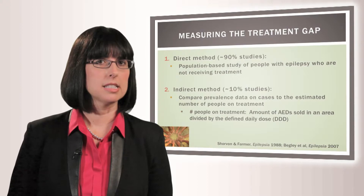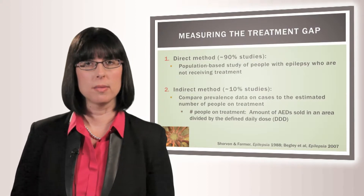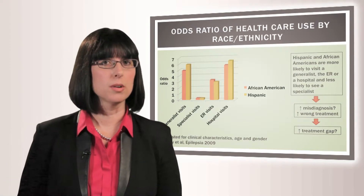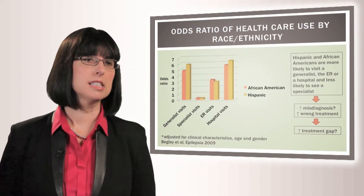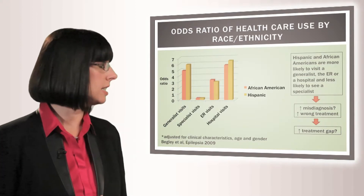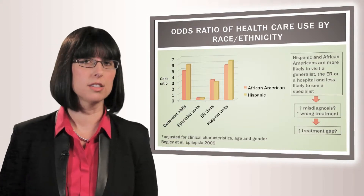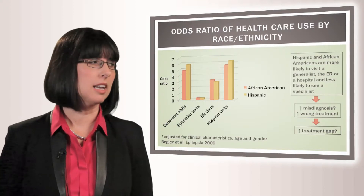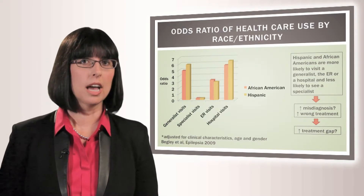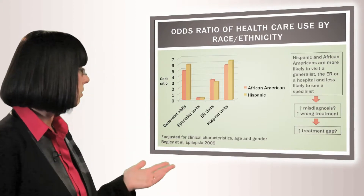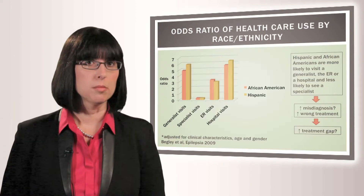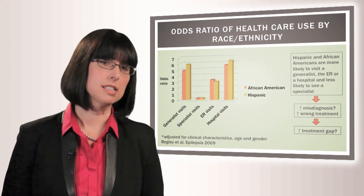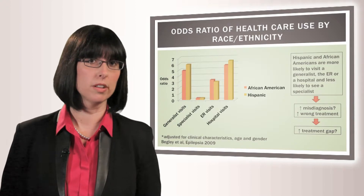Let's look at a few examples of disparities in care and treatment gap in North America. This is a study examining sociodemographic disparities in care in 560 patients with epilepsy seen at several clinics in New York City and Houston. The authors found that those who were of Hispanic and African American race had higher odds of visiting a generalist, being seen in the emergency department, or being hospitalized, but at significantly lower odds of being seen by a specialist compared to people of other races.